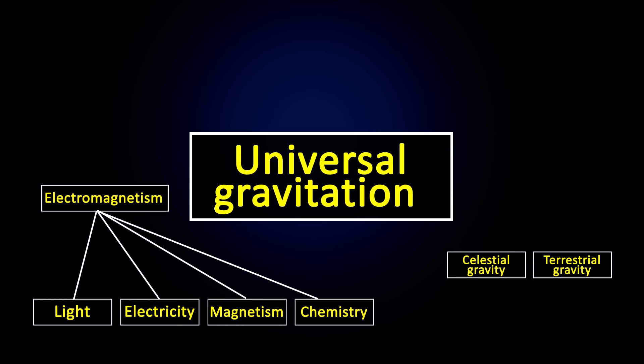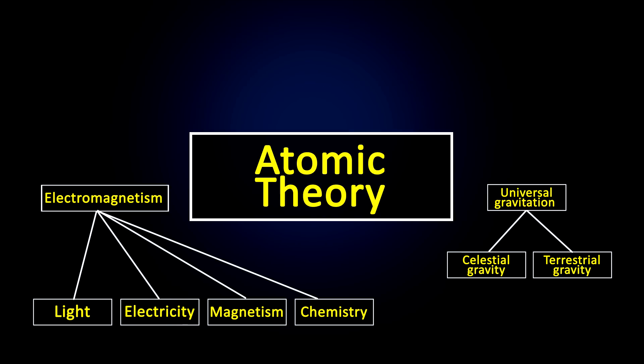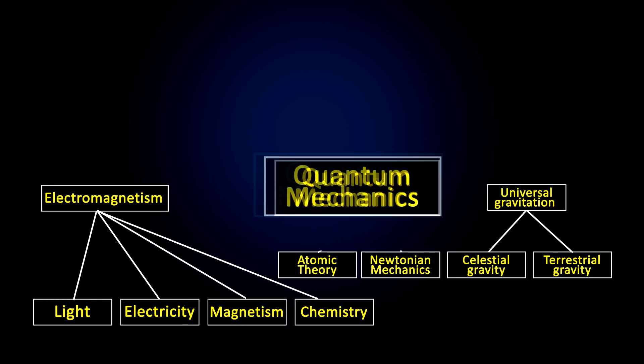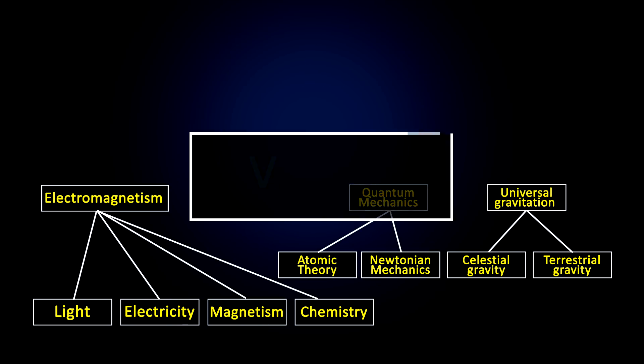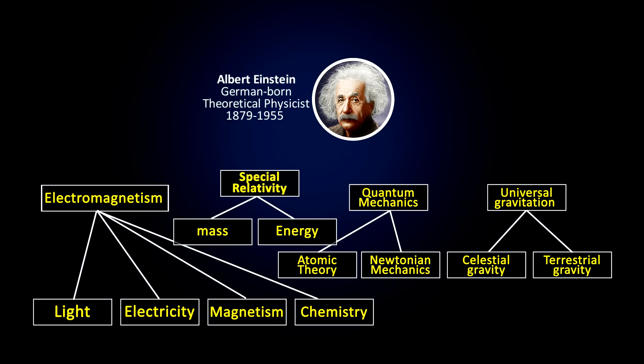Universal gravitation and electromagnetism were the two great unifications of history. But more recently, in just the 20th century, quantum mechanics came along and unified atomic theory and Newtonian mechanics. Mass and energy were unified by special relativity in 1905 by Albert Einstein.